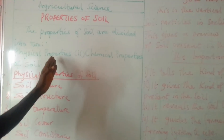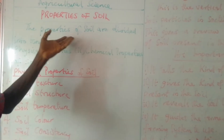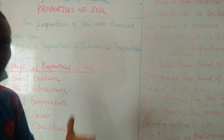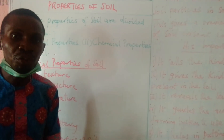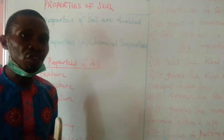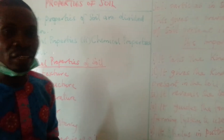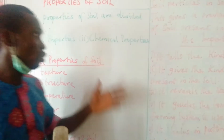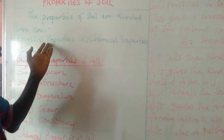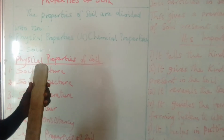Number one: physical properties of soil. When you are able to touch the soil, what do you see physically? How do you feel it in your palm when you touch it? What is the color like? Those are the things we classify as physical properties.